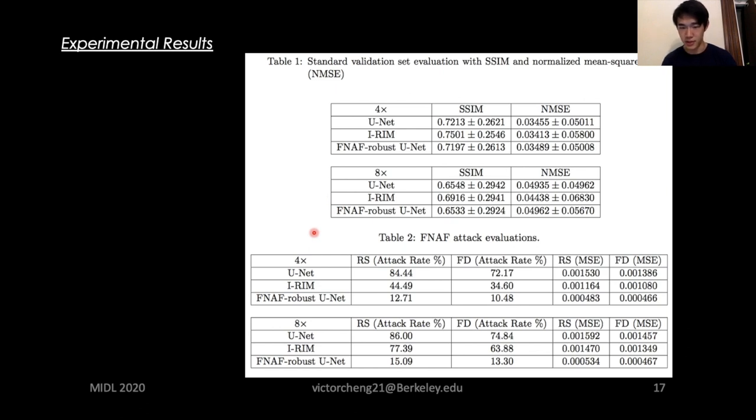The high success rate of the random search method for both models show that it's fairly easy to find a FNAF in the search space that is heuristically defined. Although IRIM is more resilient to the attack than U-Net, the attack loss is still fairly high. So this is a little bit concerning, but also understandable given that deep learning methods are not explicitly optimized for such objectives, so that these FNAF are potentially at the tail end of the distribution or even out of distribution.